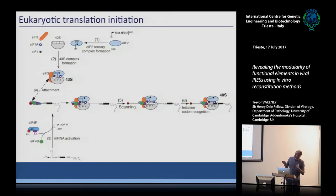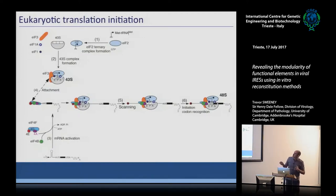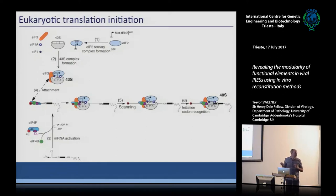This process is stimulated by other initiation factors: EIF3, a large 13-subunit complex, and the smaller proteins EIF1 and EIF1A. Together they form what's referred to as the 43S complex, which is then recruited to the 5' end of the messenger RNA.